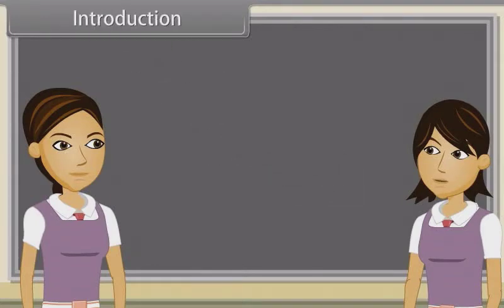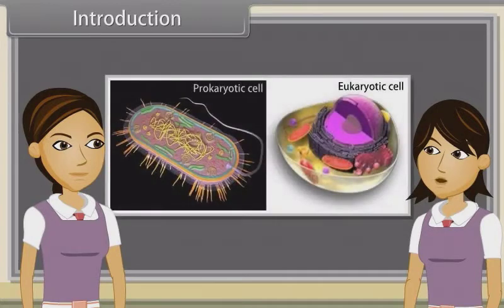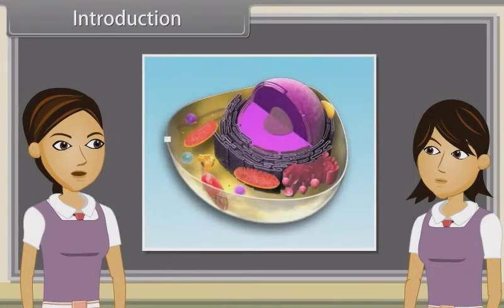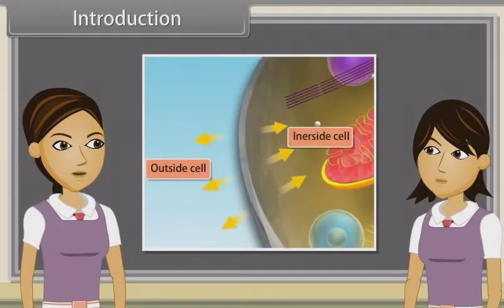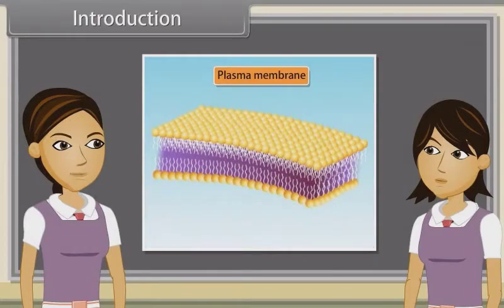We have discussed cell theory, structure and functional regions of cell, types of plant and animal cells, structure of plant and animal cells, prokaryotic cells and difference between plant and animal cells already. Now we will discuss structure of eukaryotic cells and also observe the structure and functions of cell membrane and cell wall.